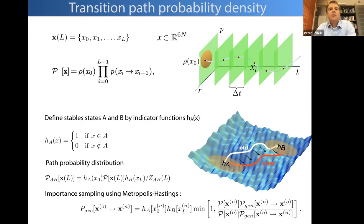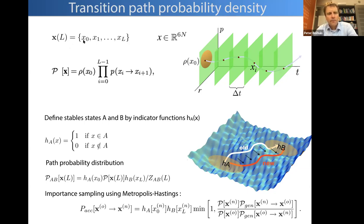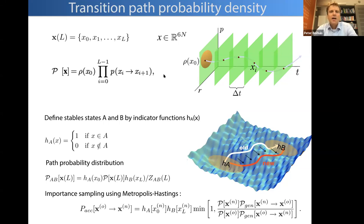To dive into the details of the method: we first need to define a transition path probability density that we can sample. We define the path itself — this bold X — which has a parameter for the length of the path and consists of a high-dimensional vector of each of the frames. This is a discretization of space-time. In a two-dimensional version with position r and momenta p, you can have a time-discretized path like this.